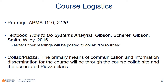The current prerequisites for this course are APMA 1110 and 2120. For those of you who have not had 2120 yet, this should not be a problem — we're looking to change the prerequisites to remove 2120, so you will be fine without it. The textbook is 'How to Do Systems Analysis,' written by John Gibson, Bill Shear, William Gibson, and Mike Smith. Bill Shear and Mike Smith are faculty here in the systems engineering department, and John Gibson — also known as Jack — was the founder of the department at UVA. I encourage you to purchase and retain this book as a reference for your career.